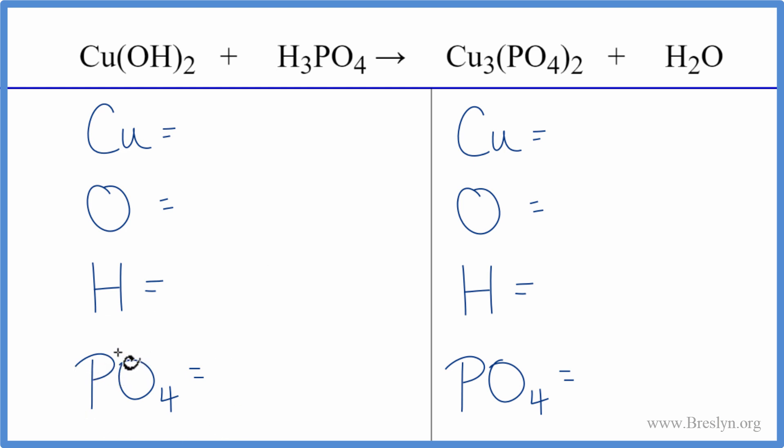Let's try. We have one copper, one oxygen times two, that gives us two, and then one hydrogen times two plus these three out here, that gives us five hydrogen atoms, and then just one phosphate.